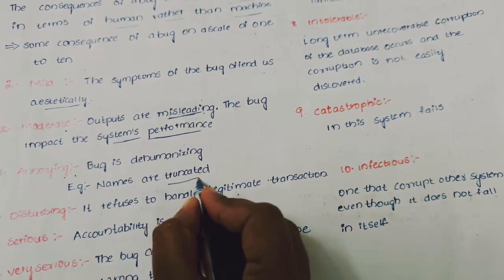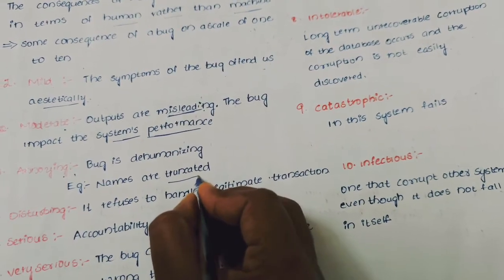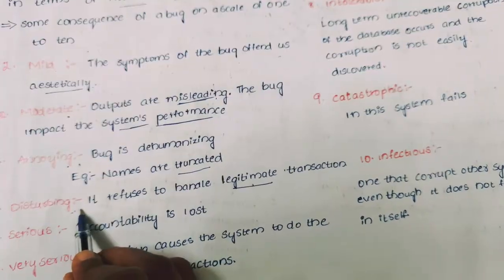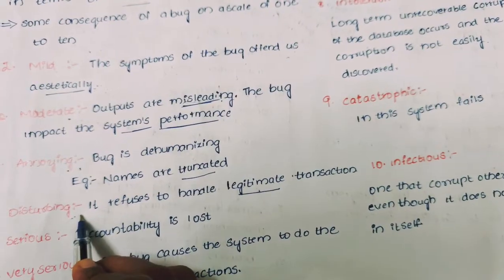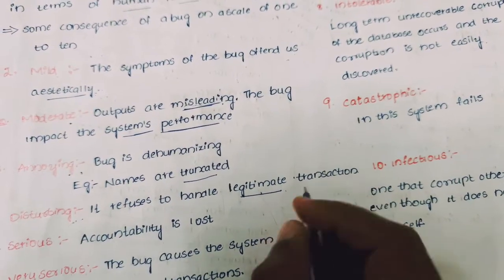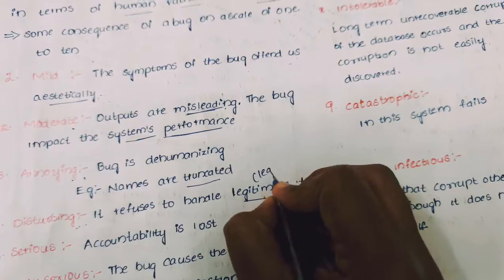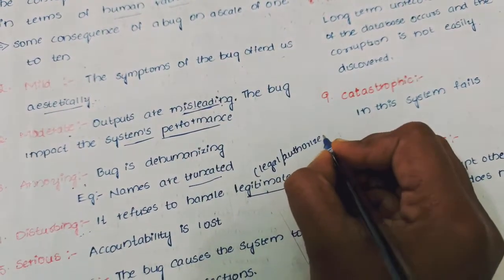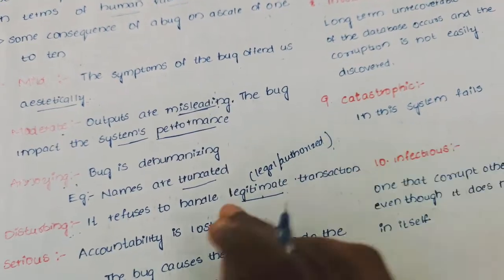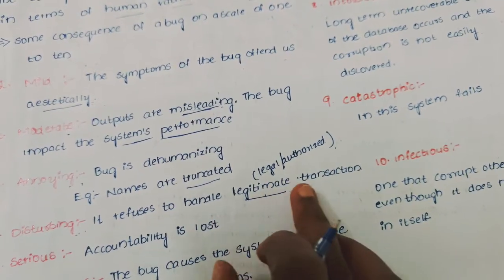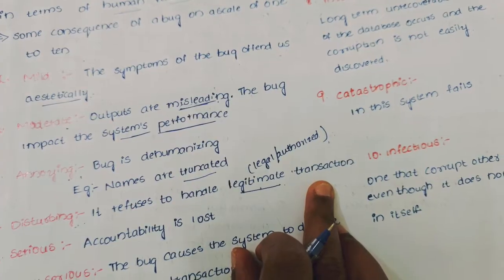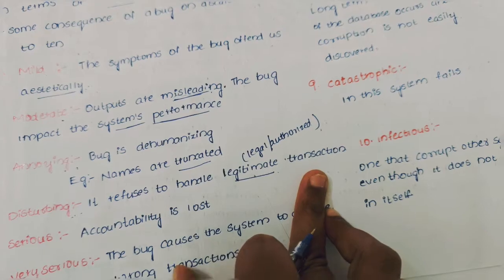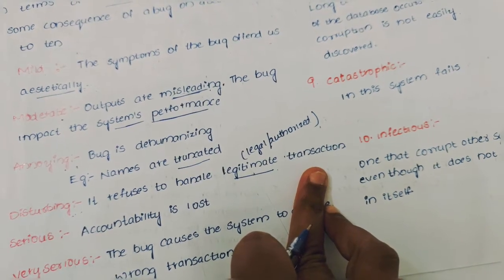The bug is dehumanizing, which is nothing but names are truncated, we can also say that the names are deleted. And fourth, which is nothing but it refuses to handle legitimate transaction, which can also say that legal or authorized. For example, whenever our ATM card does not give money, whenever the ATM card is declared as invalid.